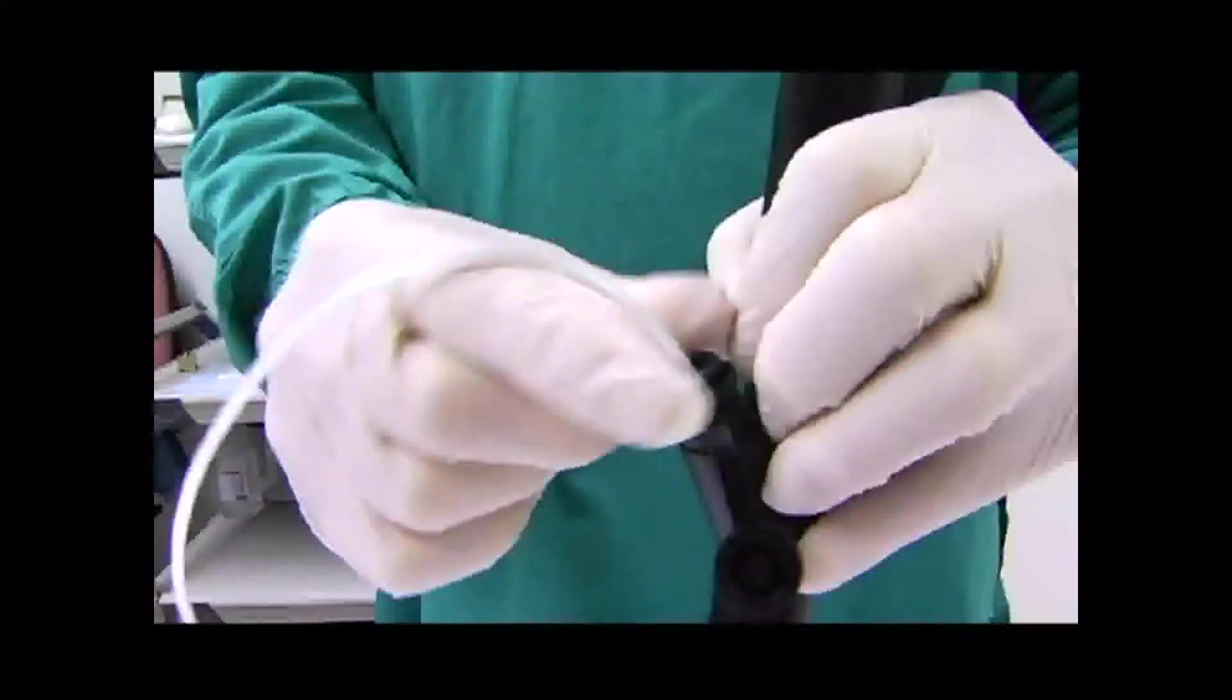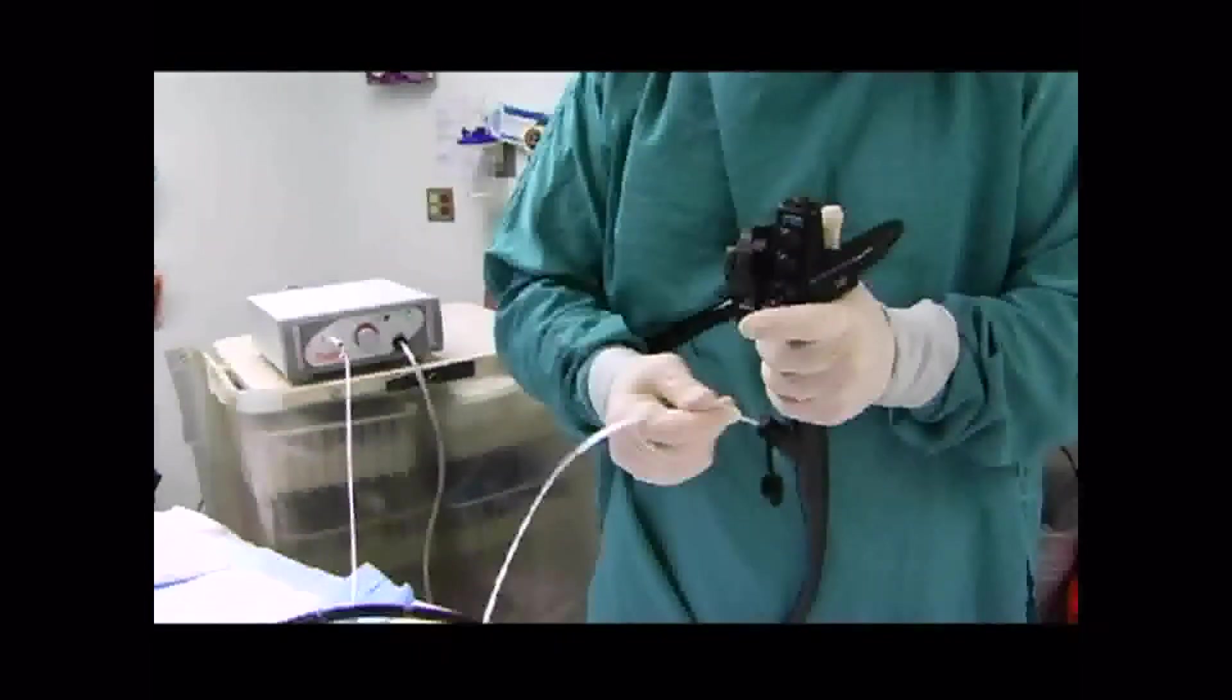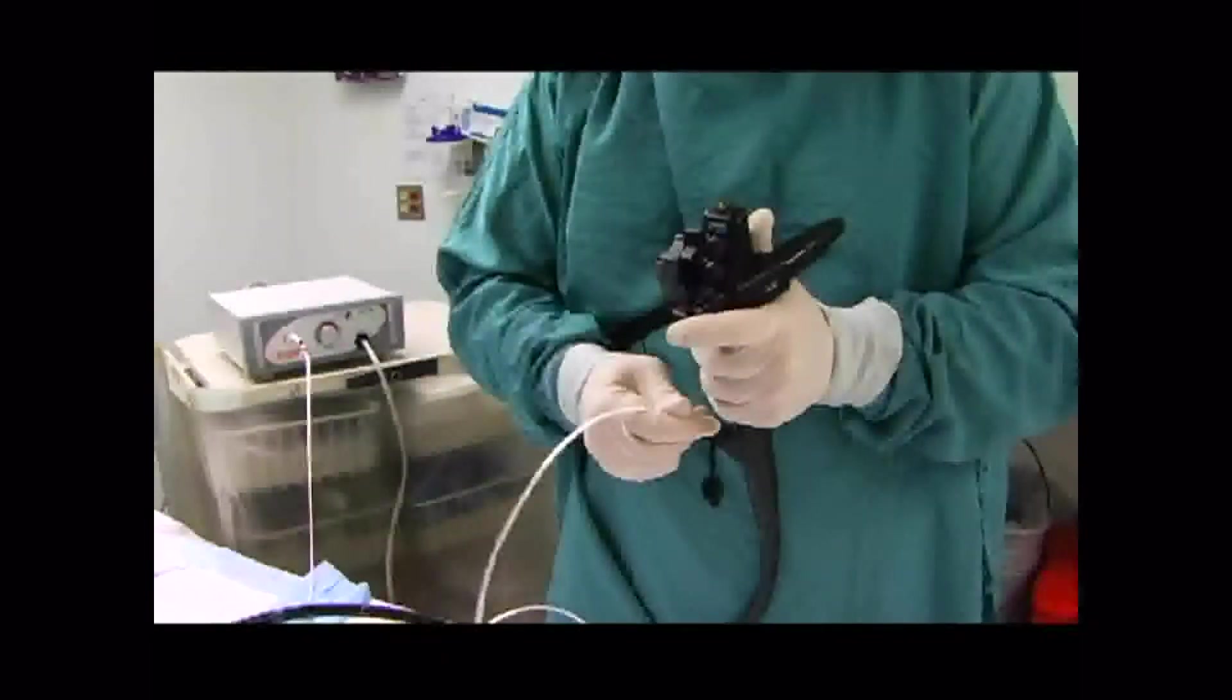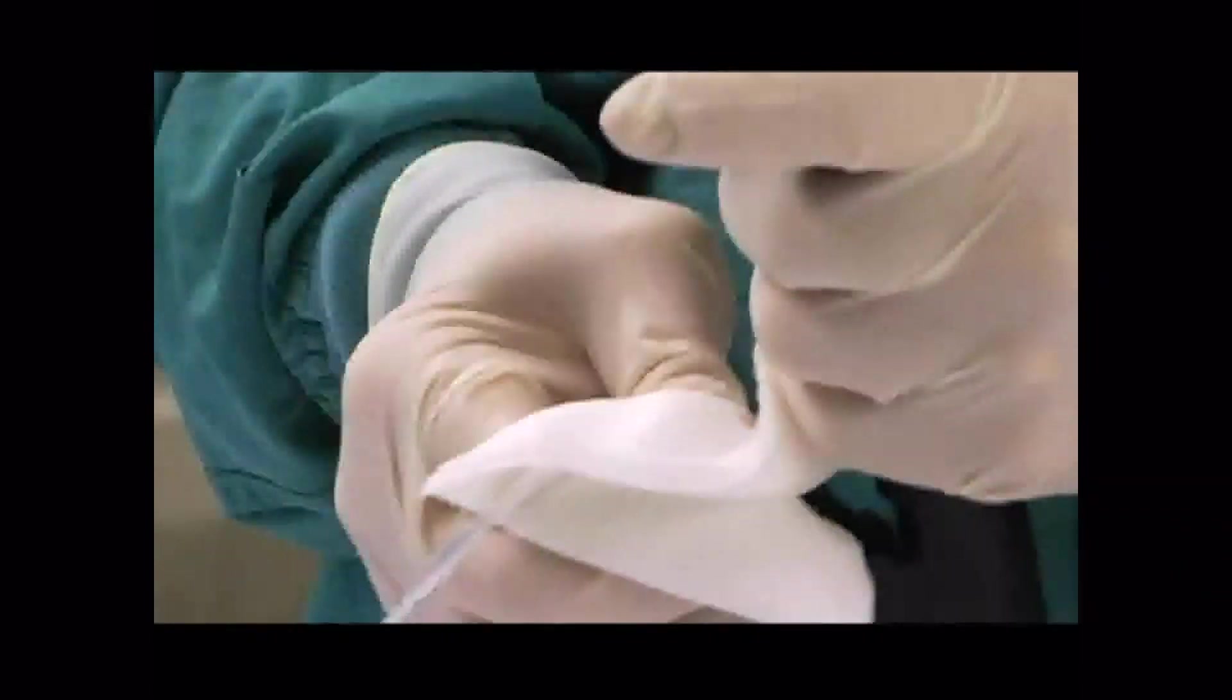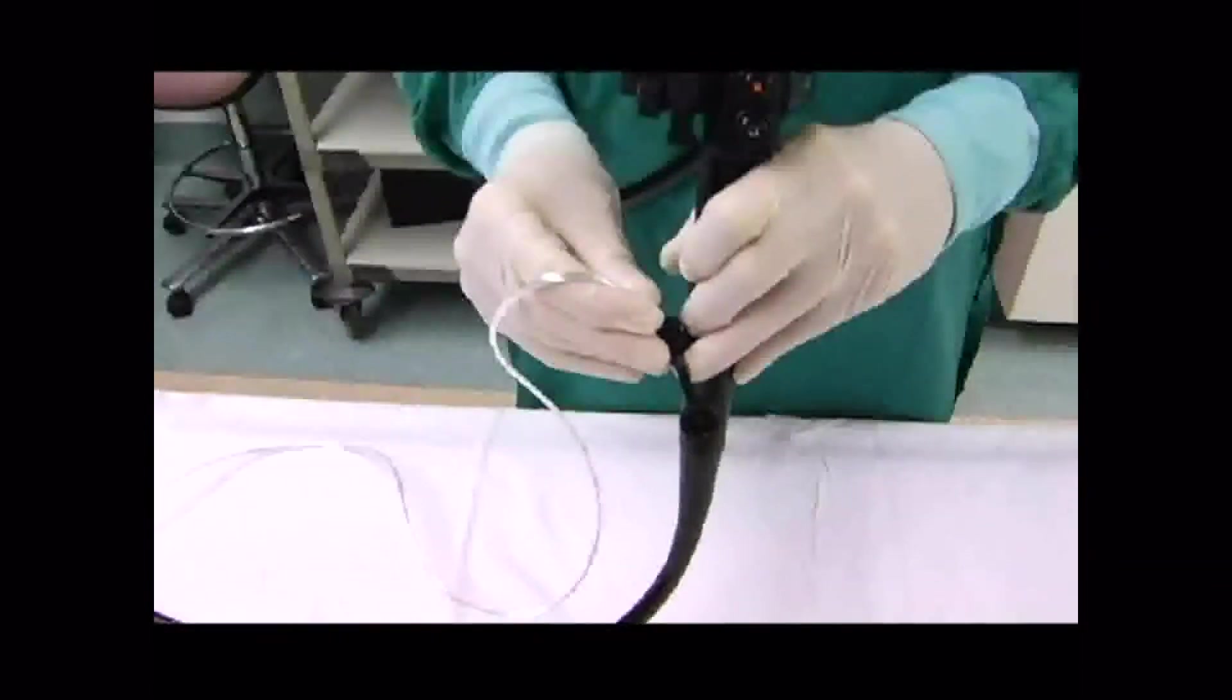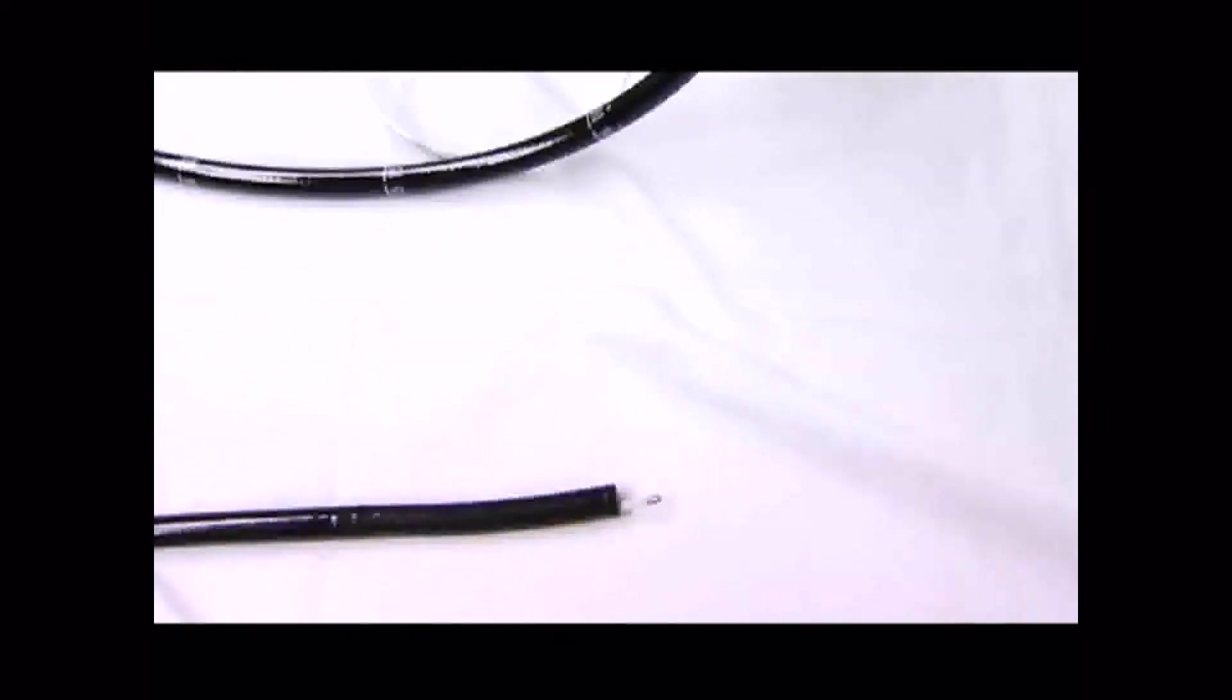Then we're going to use small strokes to slowly pass the instrument in the scope, being careful not to kink or bend it. This can take a few seconds. Make sure the probe comes out through the distal tip of the operating endoscope. Here you can see the probe sitting out gently.